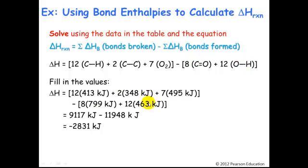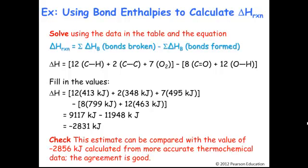Then we solve using the data in the table: bonds broken minus bonds formed. The result is negative 2,831 kilojoules of energy released when we run this reaction. You can check this estimate against the value of negative 2,856 kilojoules calculated from thermochemical data like delta HFs — you get very good agreement. The small difference arises because we're using average bond enthalpies rather than experimentally determined thermochemical data.